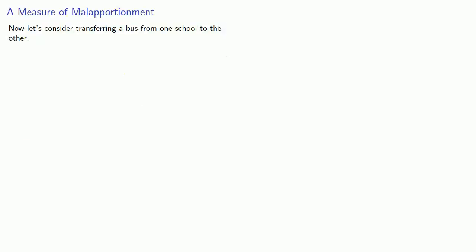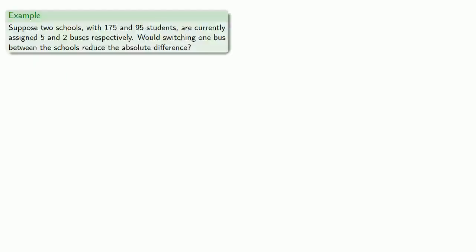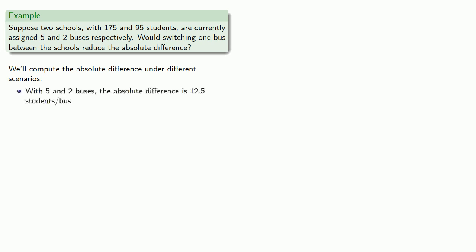Now let's consider transferring a bus from one school to the other. The key question we want to ask is: would the transfer reduce the malapportionment? Let's compute the absolute difference under different scenarios. In our current scenario with five and two buses, the absolute difference is 12.5 students per bus.